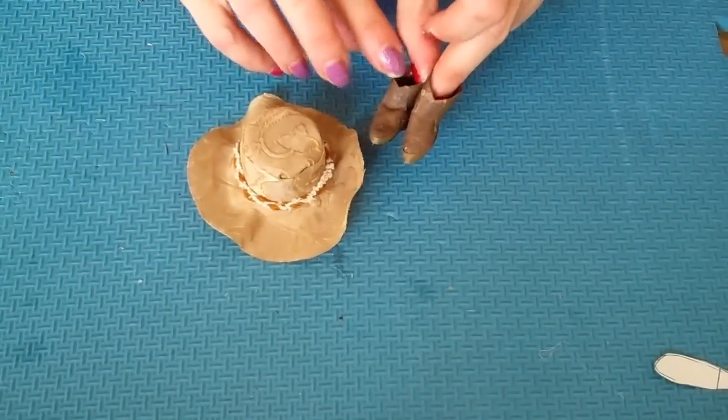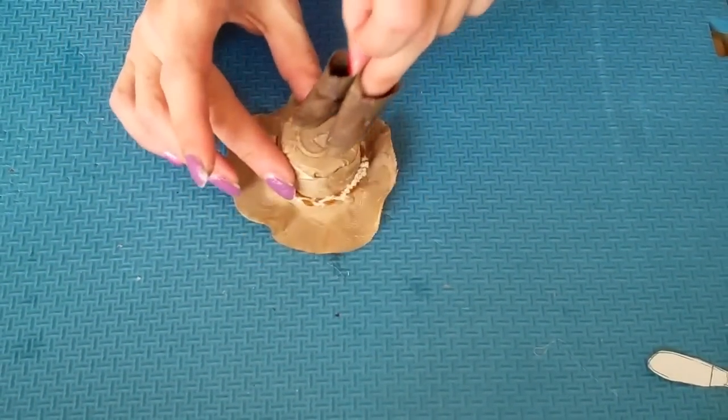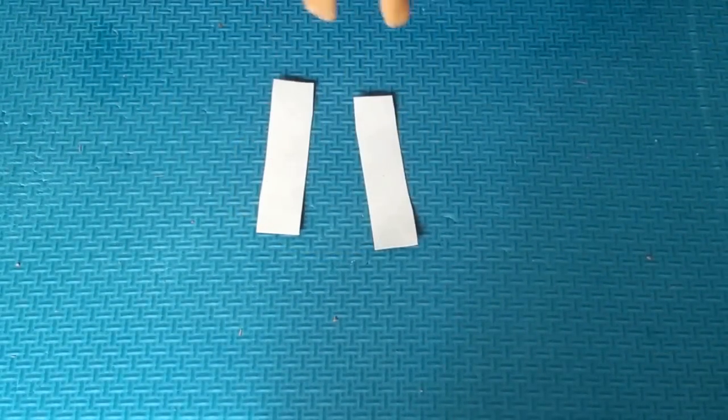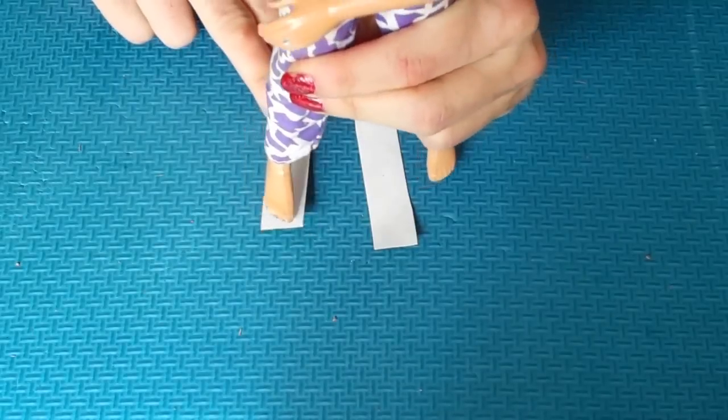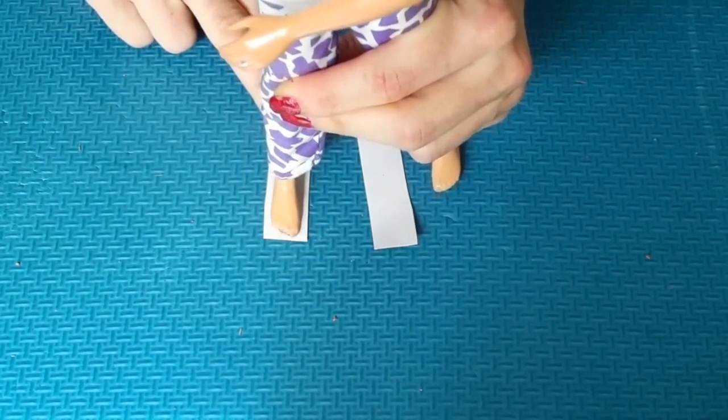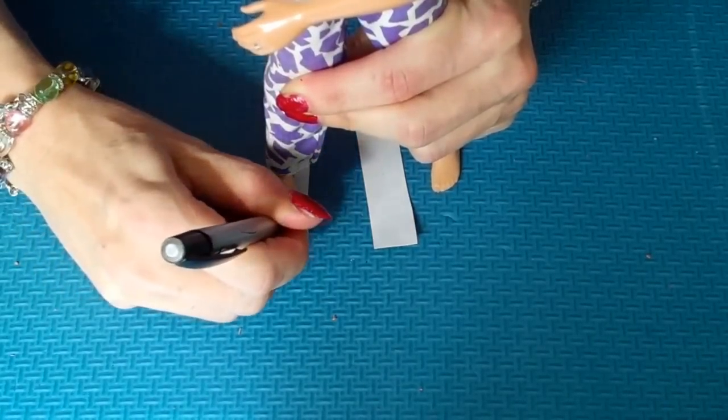Hi guys, so in this video I'm going to be making cowboy boots to go with our cowboy outfit. The first thing we want to do is cut out two pieces of cardboard and then draw Ken's foot at the top.